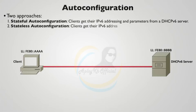The other option is stateless auto configuration. This is where the router is going to advertise out the global address and the local subnet information for the link on which that client resides. The client can take that global information learned from the router and add on its EUI-64 address, giving it a globally unique IPv6 address to communicate with.